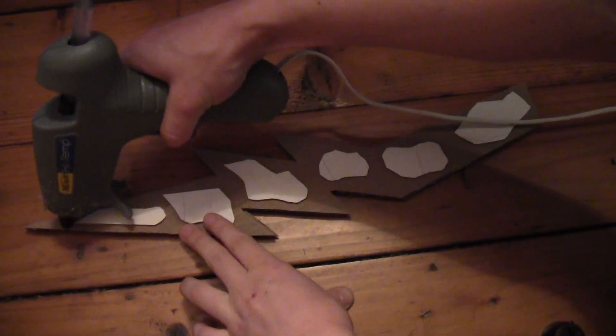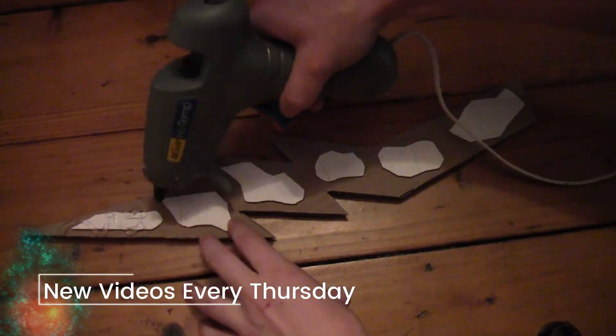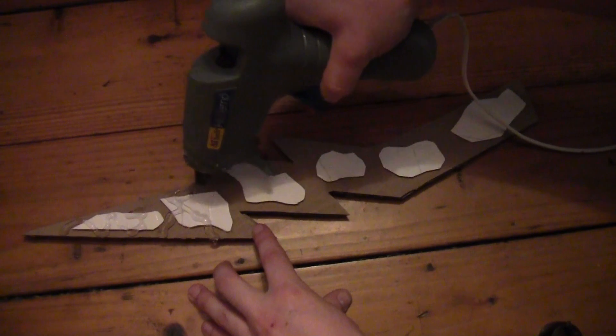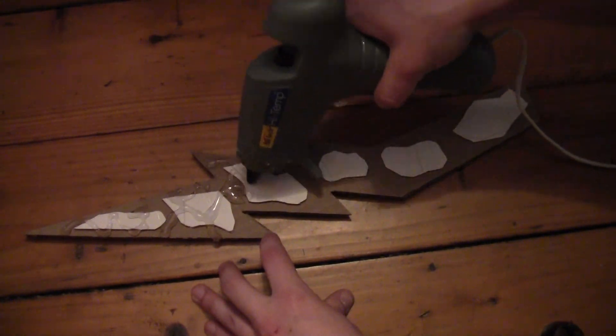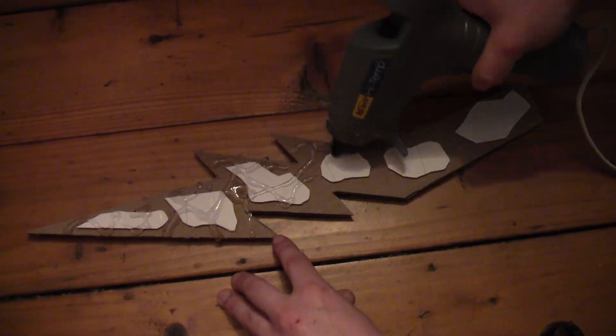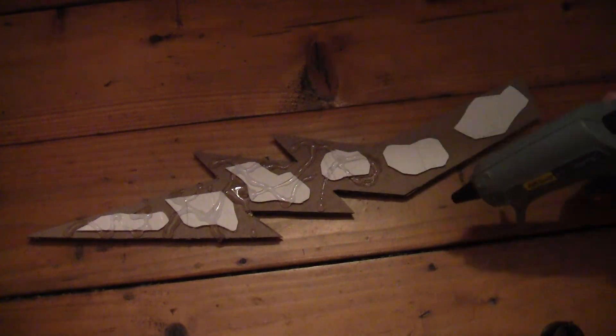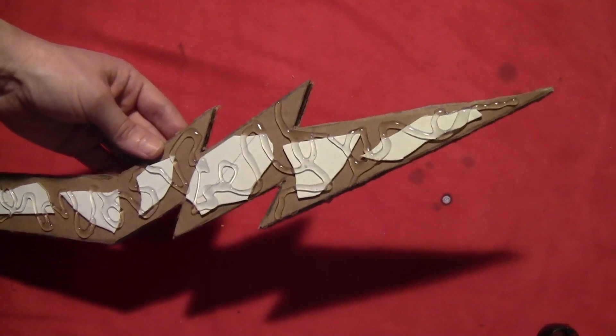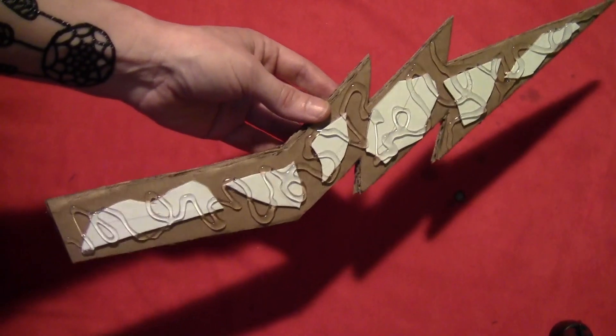Once those are dry, take a hot glue gun and just squeeze random lines out all over the dagger. I've never actually seen the show, so I just looked at pictures and this is kind of what it looked like to me. I may be wrong, but that's what it looked like. So I just squeezed a bunch of hot glue lines all over it like that.